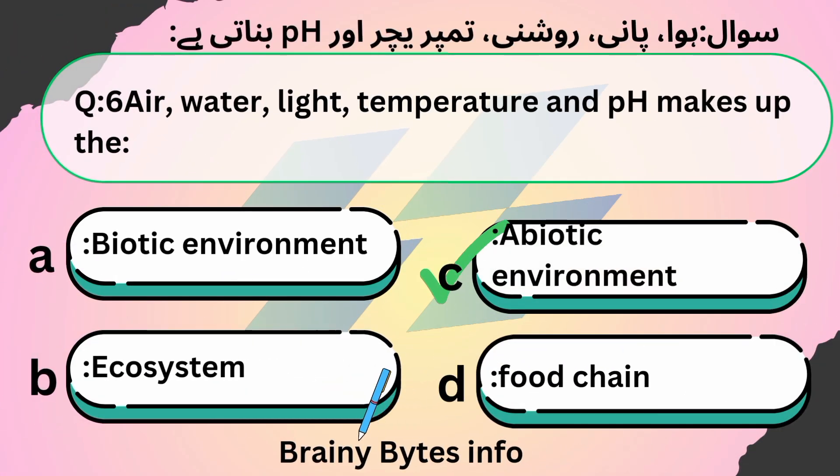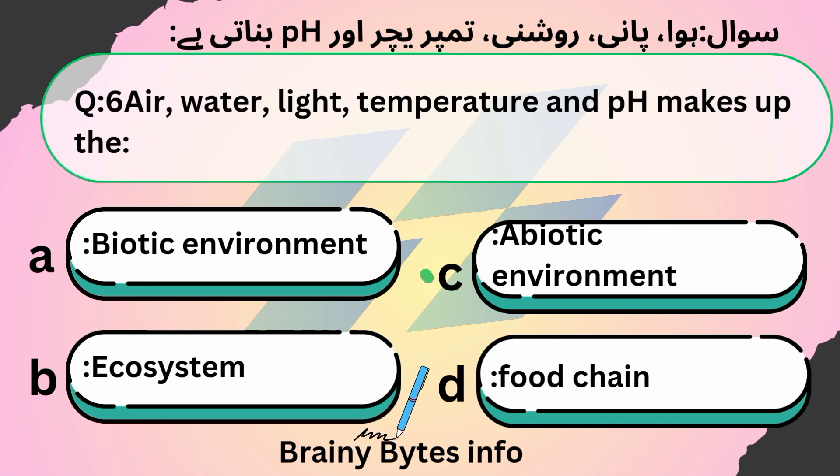Air, water, light, temperature, and pH make up the — option C — abiotic environment.